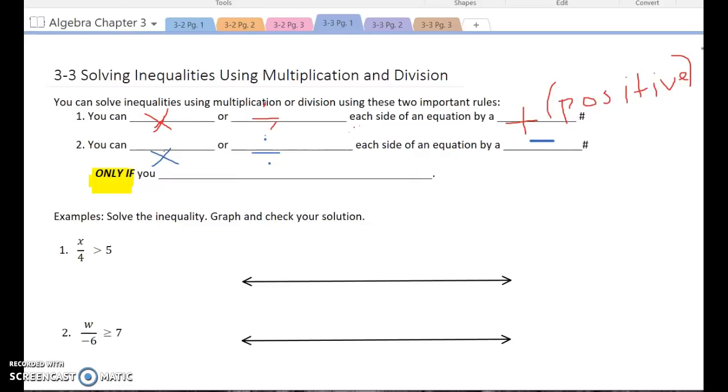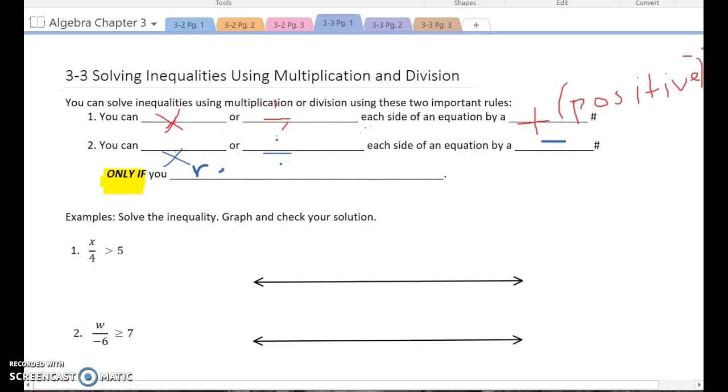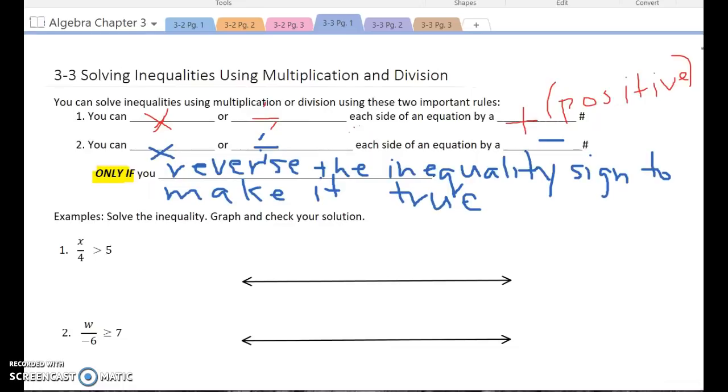We can do that only if we reverse the inequality sign to make it true. In other words, what had been greater than becomes less than or what had been less than becomes greater than. Same thing with the equal to portions.